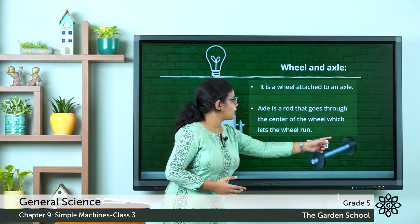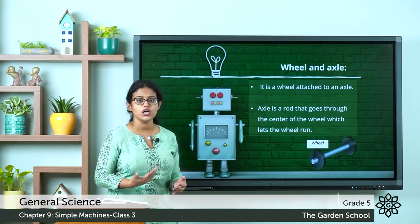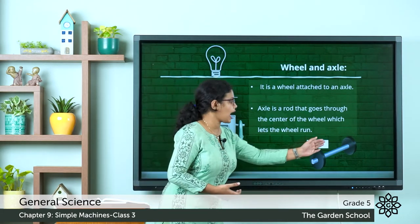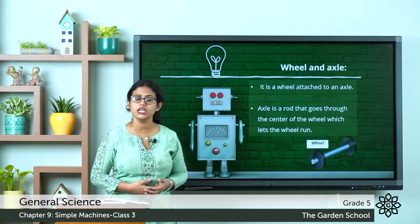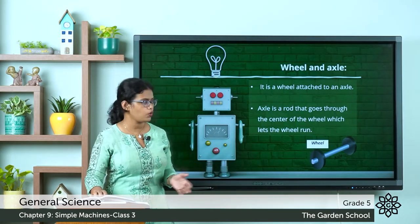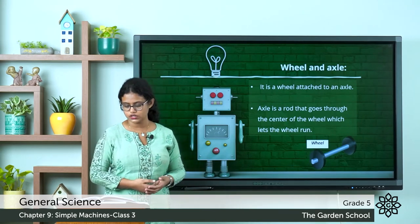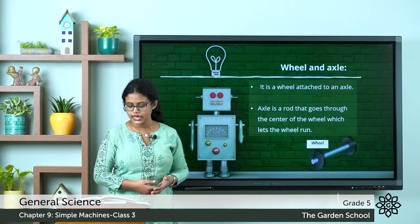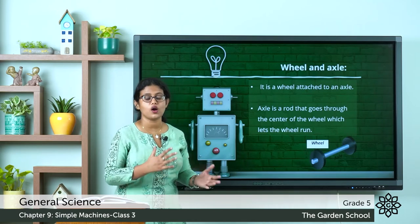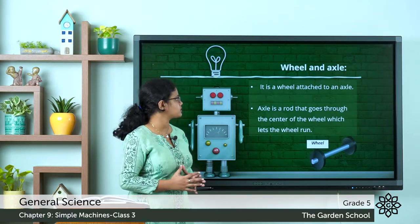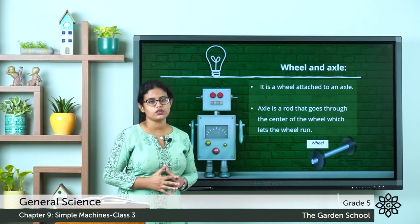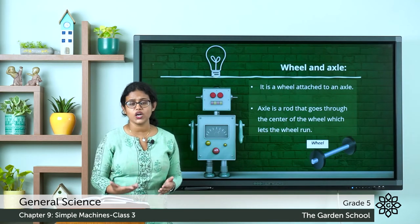You can see in the picture: the center piece is the axle, which is the rod, and the wheel is attached to it. If we turn the wheel, the axle also turns. Without an axle, the wheel cannot be used as a machine. The wheel with a rod attached to it is called the wheel and axle arrangement.